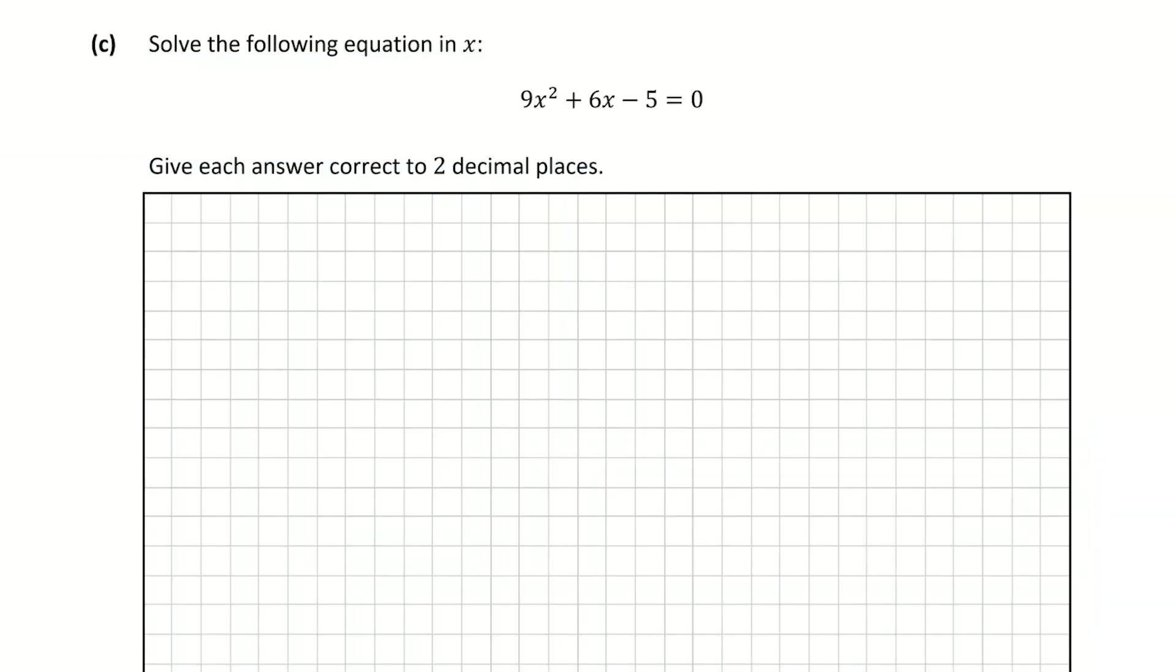Now question C asks us to solve the following equation in x: 9x² plus 6x minus 5 equals 0. And it asks us to give our answer correct to two decimal places. So immediately when we're told to give our answer to a certain number of decimal places, when you're given a quadratic equation like this, you should know that you're going to need to use the minus b formula. And the minus b formula can be found on page 20 of the log tables just in case you don't know it off by heart.